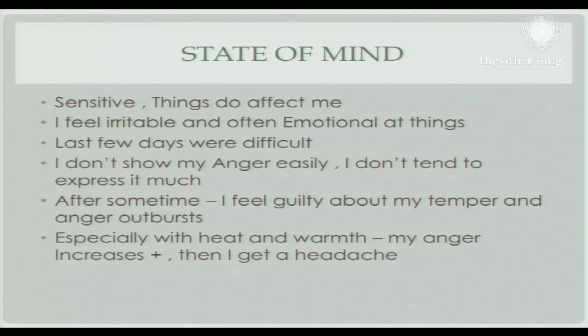It is a violent headache, worse in the sun, worse from spices and air draft, better by sleep. It comes and goes with the sun, and he gets sweat and vertigo with the headache. He wants to be in a quiet place. The effect of the problem: he feels very angry, gets very emotional, is very sensitive — things affect him easily, everything affects him. Then he gets angry, doesn't show it, and then feels guilty about his temper and anger. So you are getting a pattern of a specific family where there is anger associated with guilt and suppression — a little idea of a plant family.